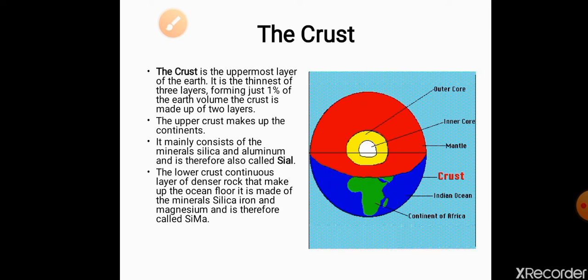The crust forms just one percent of the earth's volume. Is ki matra humari earth ke volume ki one percent hoti hai. For example, suppose humari earth ka volume hundred percent hai — so this volume is divided into the three layers: core occupies 15 percent, mantle occupies 84 percent, and the remaining one percent is occupied by the crust. That is why we call the crust the thinnest layer of the earth.